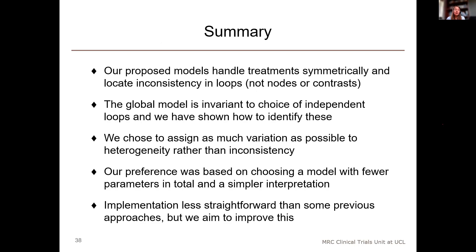In summary, our proposed models handle treatments symmetrically within a loop, and inconsistency terms are located within loops rather than nodes or treatment contrasts. The global model is invariant to the choice of independent loops, and we've provided an algorithm for identifying a set of independent loops. When multi-arm trials include comparisons not in pairwise trials, we minimize the number of loops to assign as much variation as possible to heterogeneity rather than inconsistency — a preference based on choosing a model with fewer parameters, which may be simpler to interpret. Implementation of our model is less straightforward than some previous approaches, but we aim to provide tools to improve this.